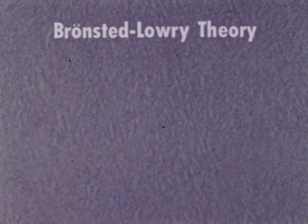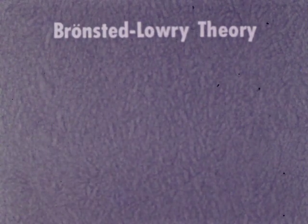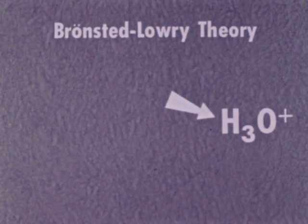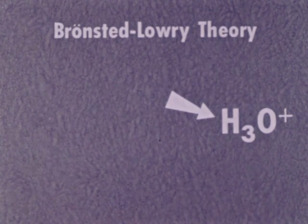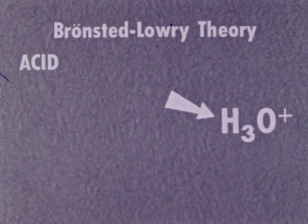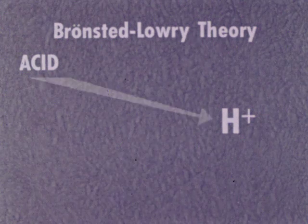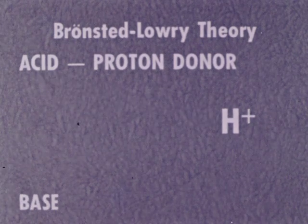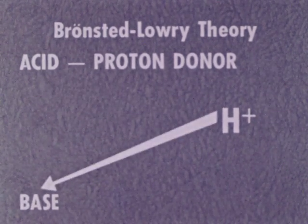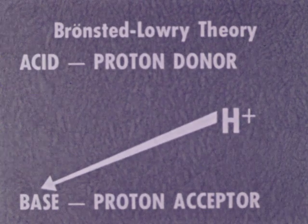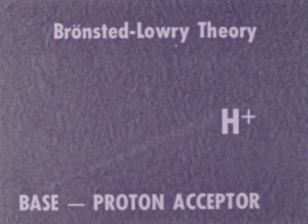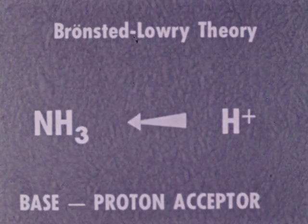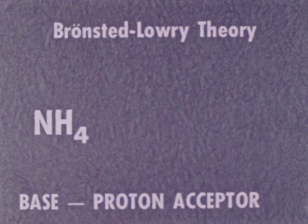In 1923, Bronsted and Lowry organized and enlarged the newer concepts, using a definition based on the hydrogen ion, or proton. They defined an acid as a substance which dissociates to furnish protons — a proton donor. A base then becomes a substance which accepts protons — a proton acceptor. In this concept, ammonia gas can be considered a base, as it will accept a proton to become an ammonium ion.